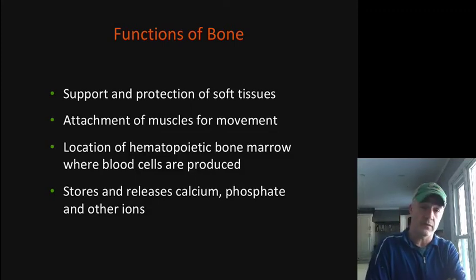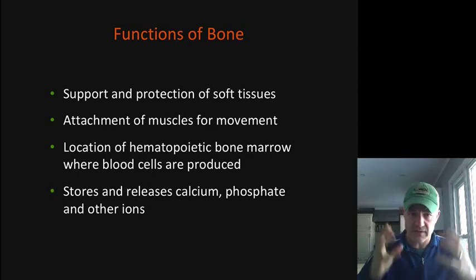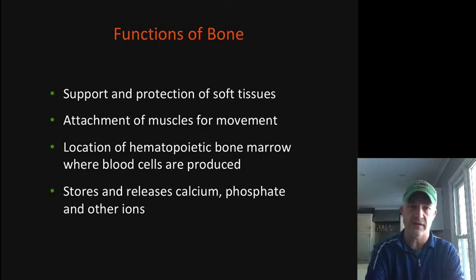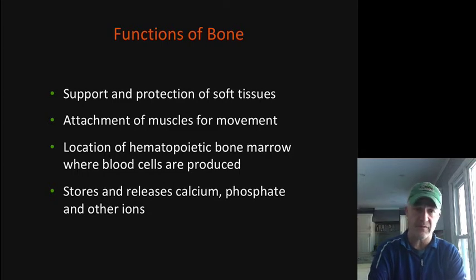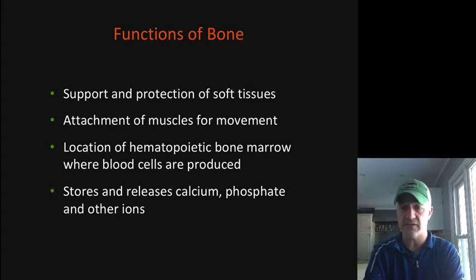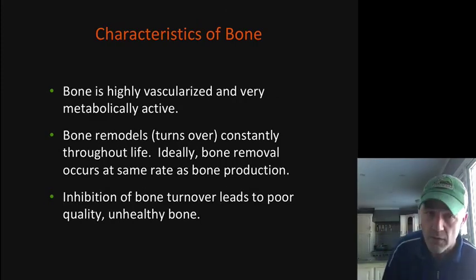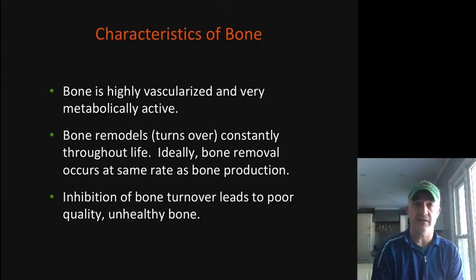We're looking at bone, another one of the supporting connective tissues. The big difference between bone and cartilage is the calcification of the matrix. Bone does a lot of protection — things like the skull and the ribs — and it's also where we attach our muscles to allow movement. Within the red bone marrow, we make all of our different blood cells, and bone serves as a warehouse for maintaining calcium and phosphate levels in the body. Unlike cartilage, bone has a very rich blood supply.